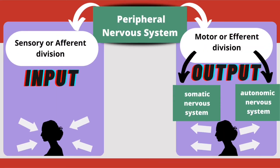If we talk about the peripheral nervous system specifically, it further consists of a sensory or afferent division and a motor or efferent division. As their names indicate, sensory information is received through the sensory or afferent division, whereas the motor or efferent division is responsible for conveying the response to the affected organ, as received from the central nervous system.